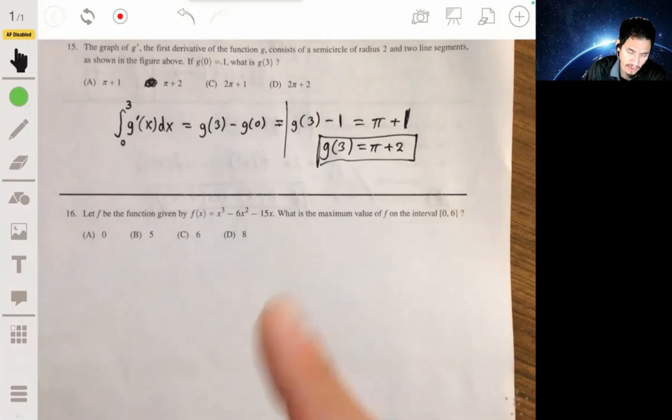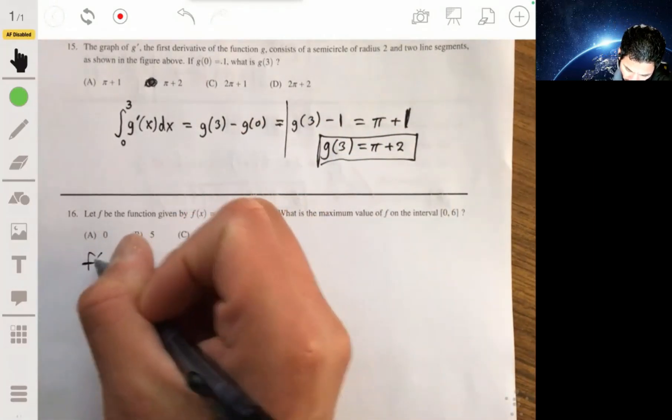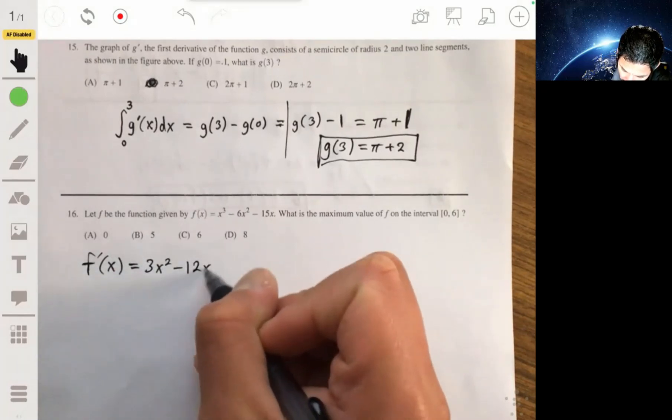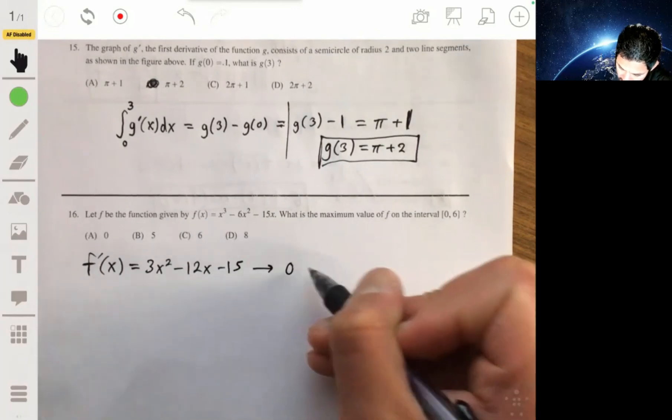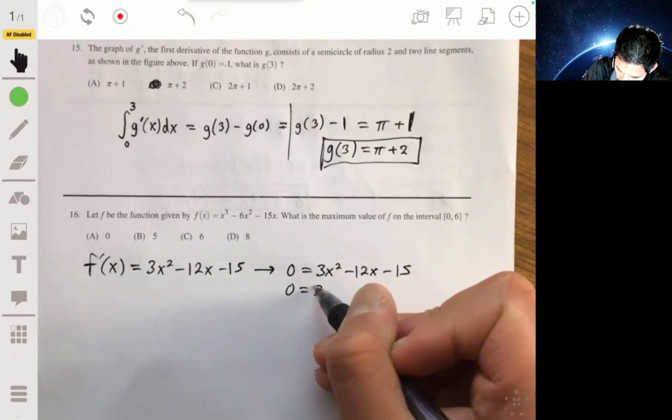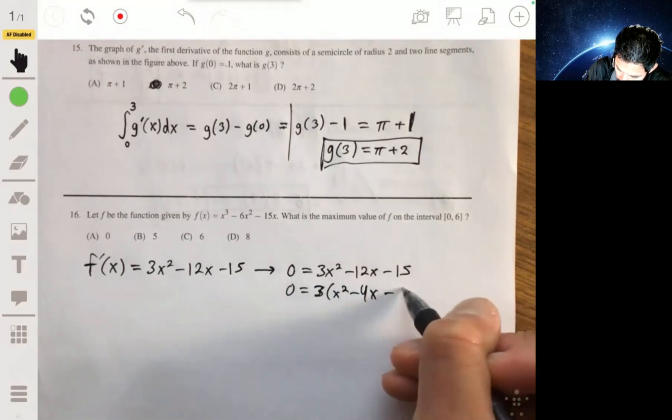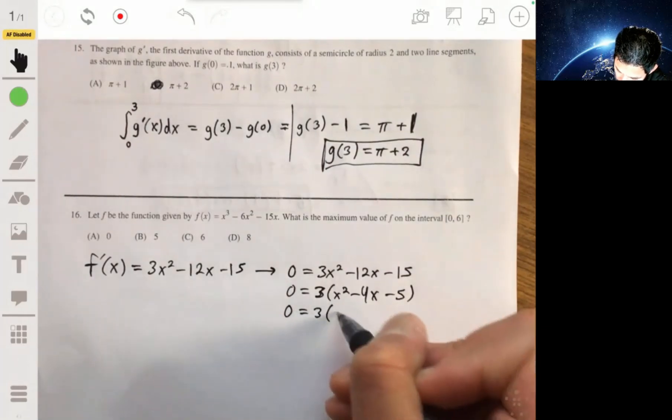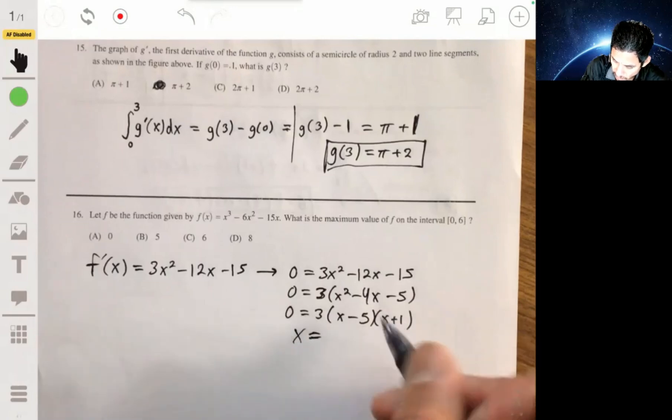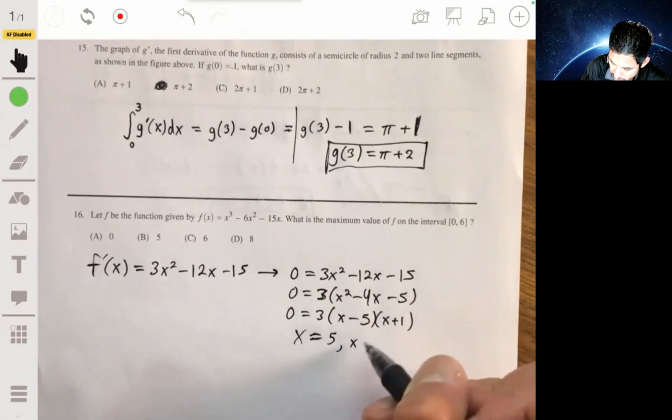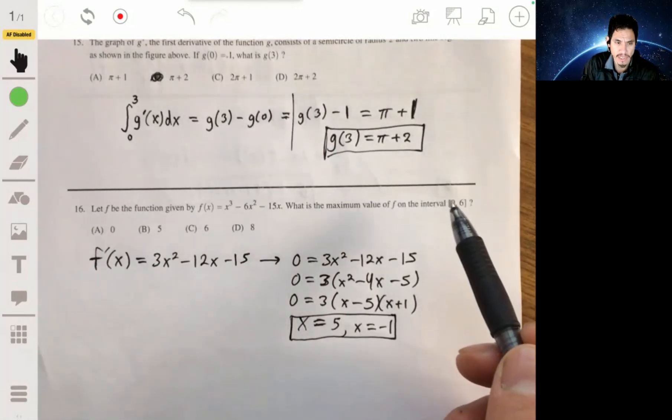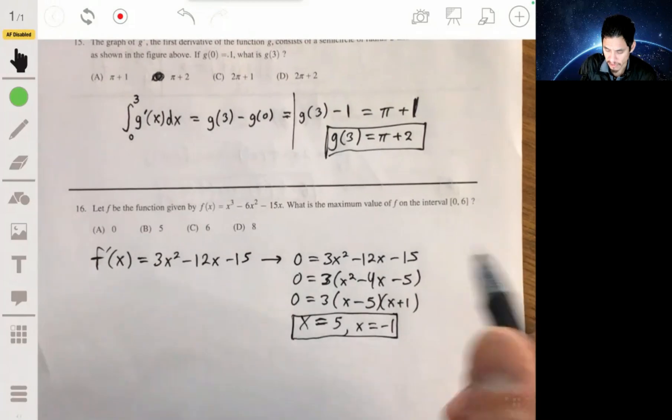So the derivative of f of x, f prime of x would be equal to 3x squared minus 12x minus 15. Set this equal to 0. Then you have x equals 5 and x equals negative 1 as your possible critical values. Now, since we are only focusing on the interval from 0 to 6, we don't care about the negative 1.